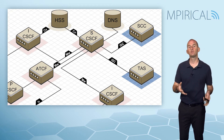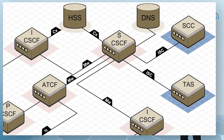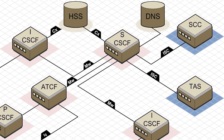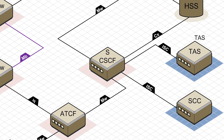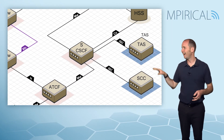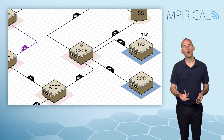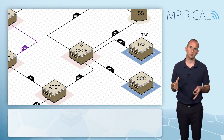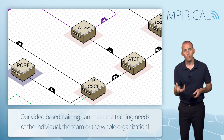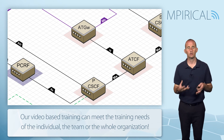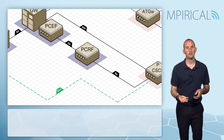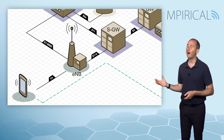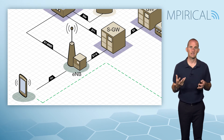Moving to the called party, it is more or less a mirror image of what we've discussed so far. We have the interrogating call session control function and the serving call session control function, along with the associated called party application servers. Moving through the network we have the called party's access transfer control function and gateway, then their policy and charging control framework, and finally their LTE access network.